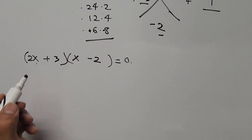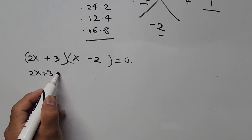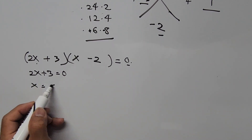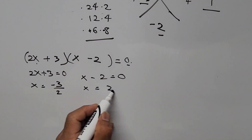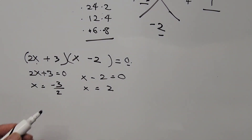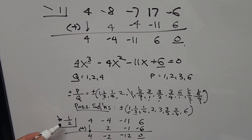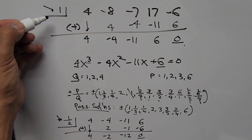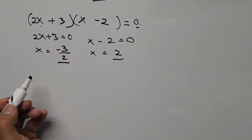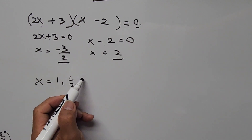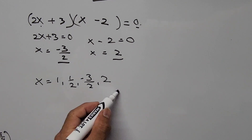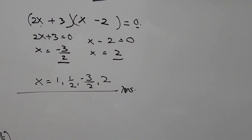Setting each factor to zero: 2x plus 3 equals 0 gives x equals negative 3/2, and x minus 2 equals 0 gives x equals positive 2. So all four values of x are: x equals 1, x equals 1/2, x equals negative 3/2, and x equals positive 2.